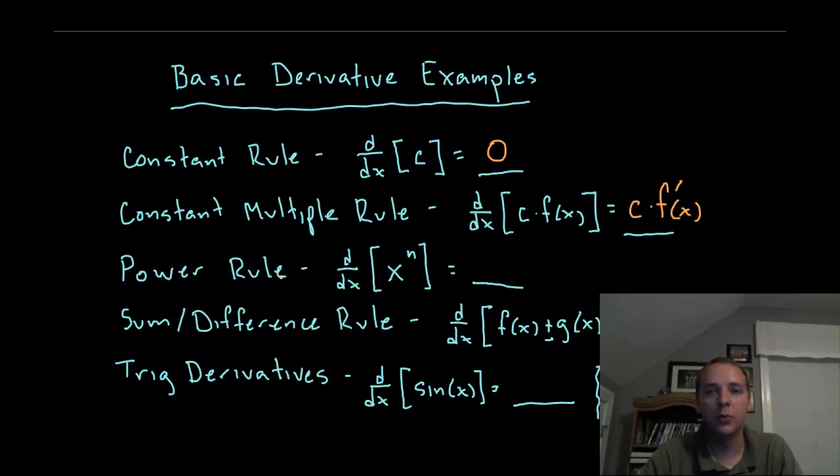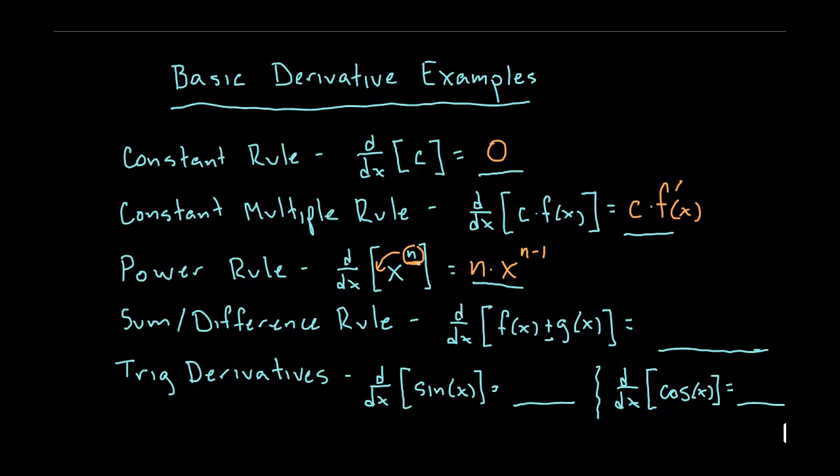The power rule is a rule we use all the time and the pattern for this one, the shortcut for this term, is that the n comes out of the exponent and becomes the coefficient and you have x raised to the n minus 1. You have to subtract 1 from whatever that exponent is whether it be an integer or a fraction.